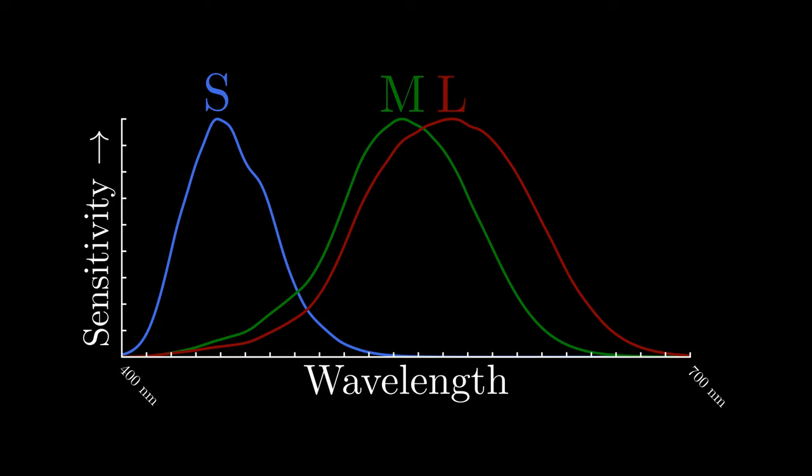All colors now have a position in a three-dimensional space with S, M and L as the axes. However, due to the overlap in cone sensitivities, this space is quite awkward to work with, and has a lot of positions that do not match real colors.